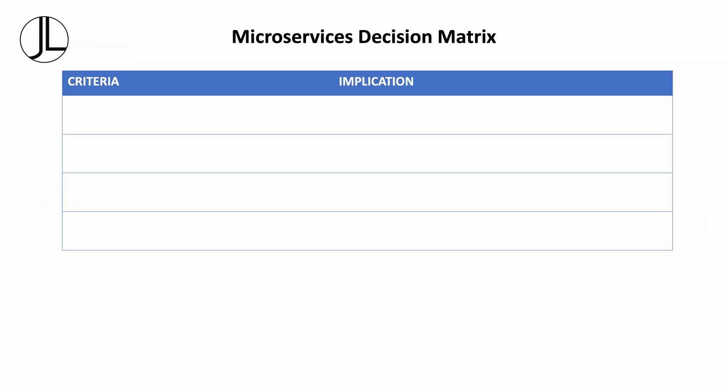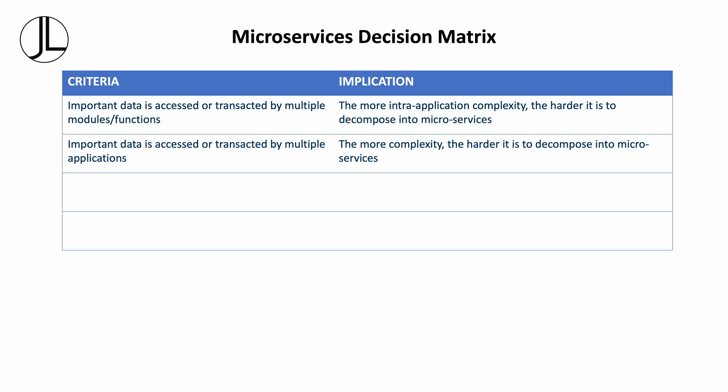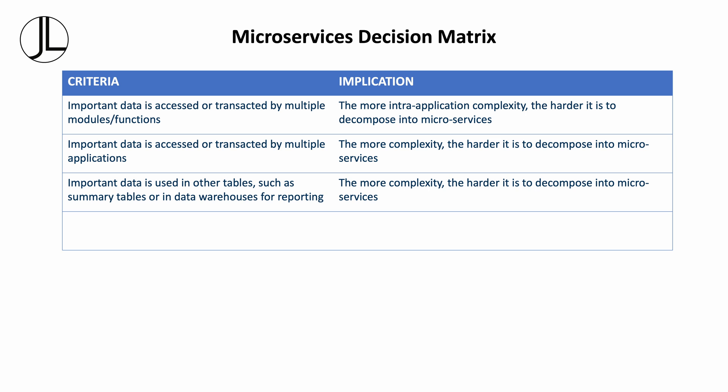A decision matrix might look like this. Important data is accessed or transacted by multiple modules or functions — the more intra-application complexity, the harder it is to decompose into microservices. Important data is accessed or transacted by multiple applications — the more complexity, the harder it is to decompose. Important data is used in other tables, such as summary tables or in data warehouses for reporting — the more complexity, the harder it is to decompose into microservices.